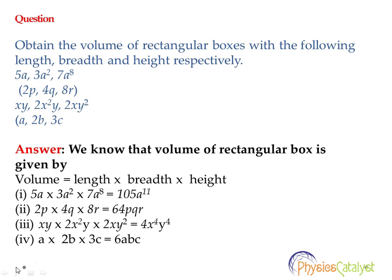For option 1, the answer would be 5a into 3a squared into 7a to the power 8. In these type of multiplications, we need to segregate the values. First of all, we need to multiply the numeric values. In this case, the numeric values are 5, 3, 7. So multiplying these three values, we get 105.